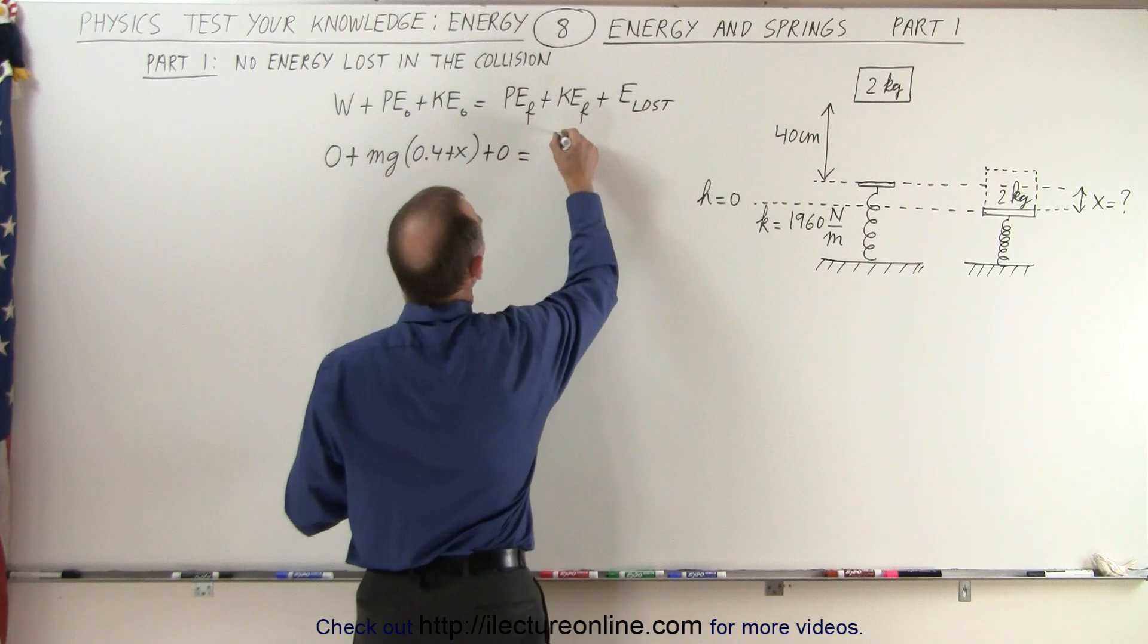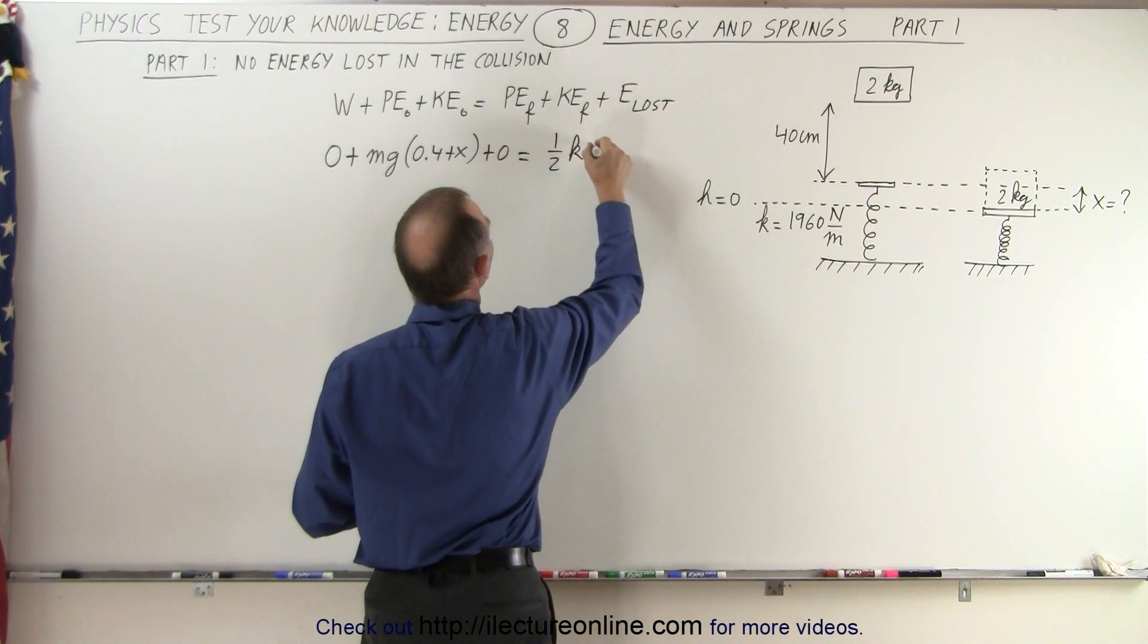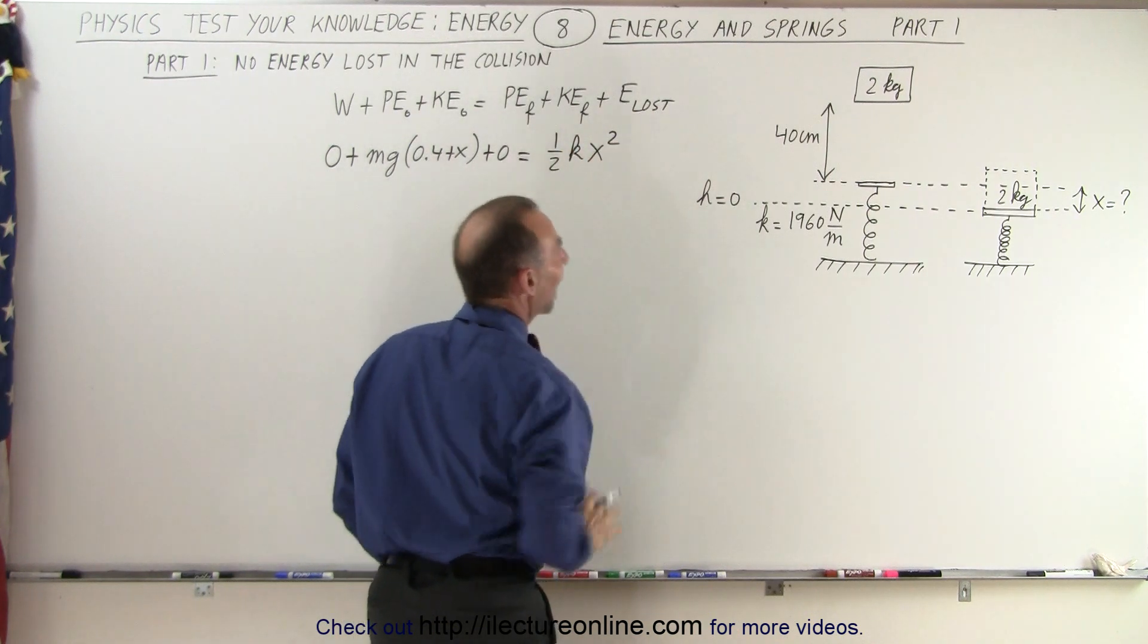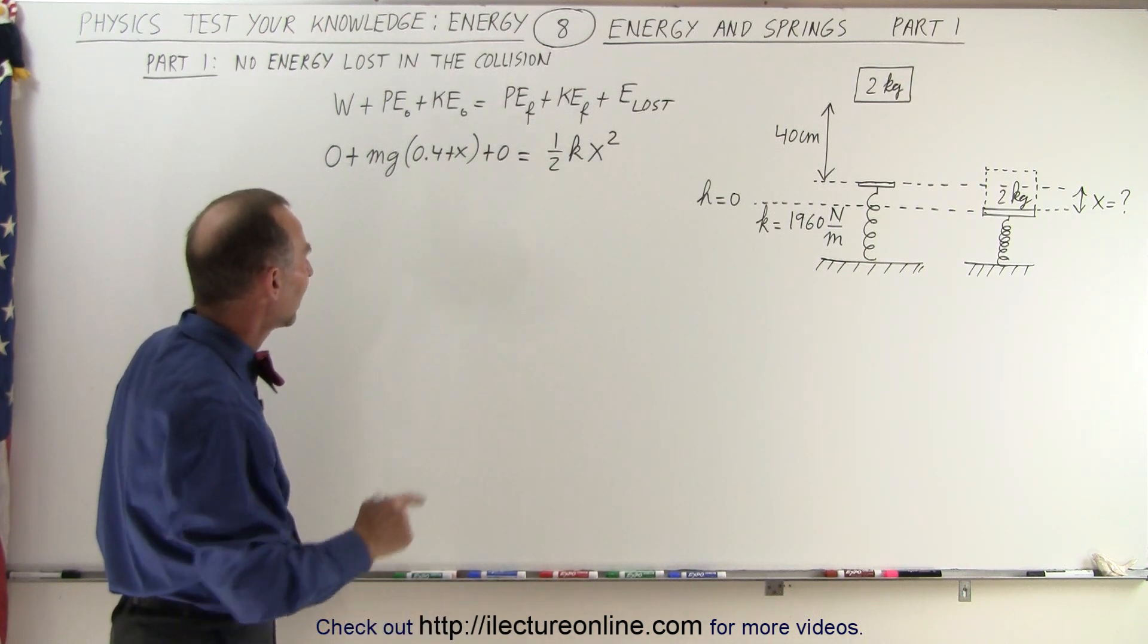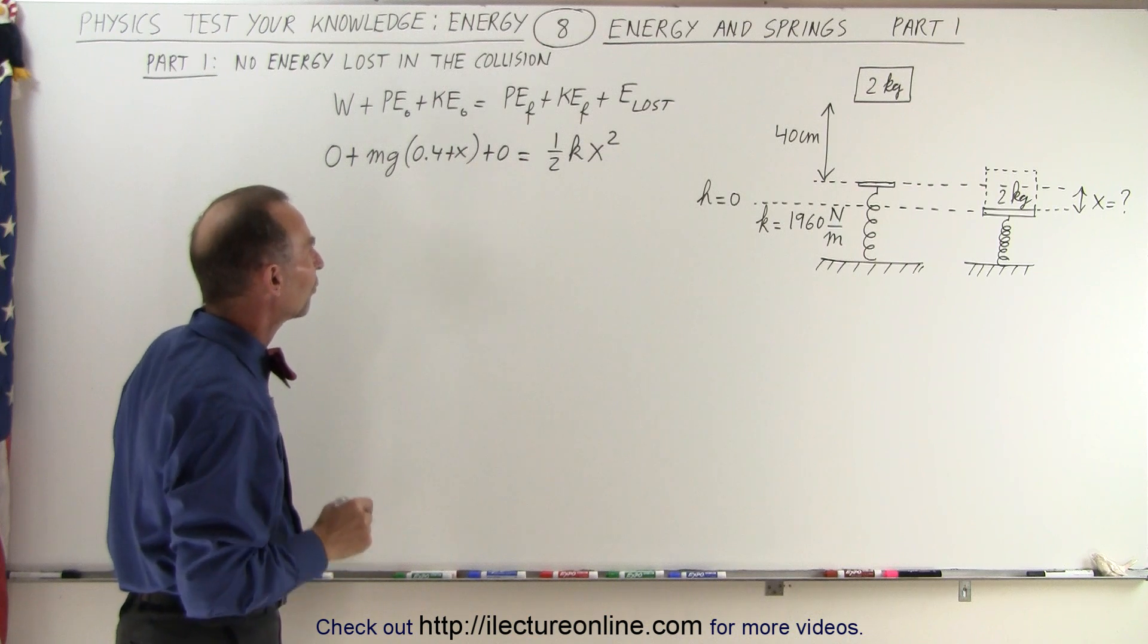So potential energy will be one-half kx squared. There's no height anymore to the object, but we do have kinetic energy stored in the spring. And so this is what we need to solve for x.